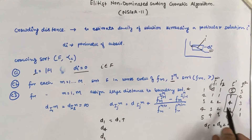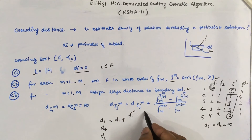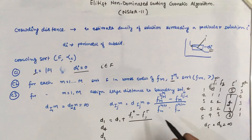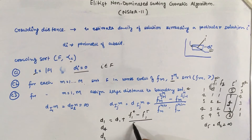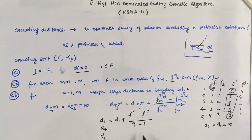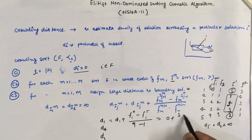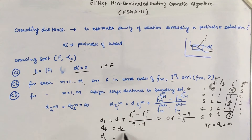To calculate d1, we fetch the fitness values of the neighboring solutions. d1 = d1 + (F1_fitness(solution 4) − F1_fitness(solution 5)) / (max − min). The next and previous neighbors of solution one are four and five. With max fitness value of 9 and min of 1, d1 = 0 + (3 − 9) / 8. Similarly, we calculate d4 and d3.